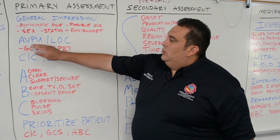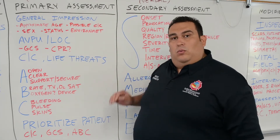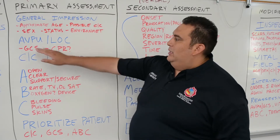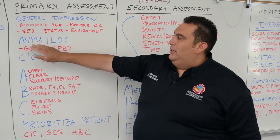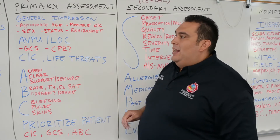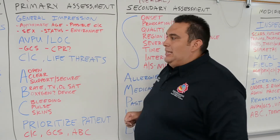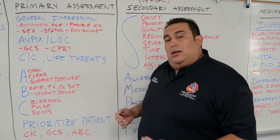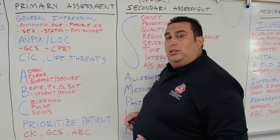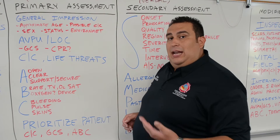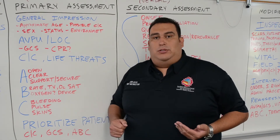Next is AVPU and level of consciousness. We're going to assess how physically awake our patient is — whether they're alert, respond to verbal, respond to painful stimuli, or are unresponsive. We can also start incorporating GCS. As I walk up to my patient, if their eyes are closed, I can start verbal stimuli, and if they don't respond, I can immediately move into painful stimuli.